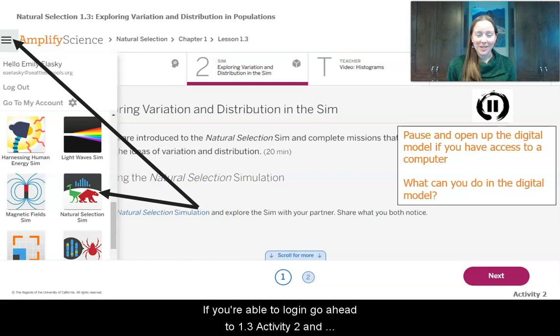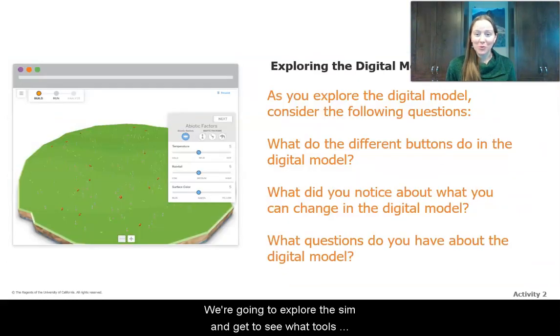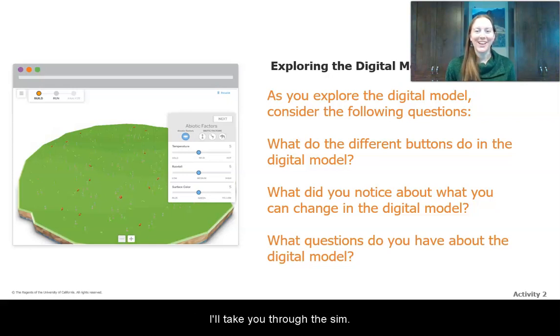If you're able to log in, go ahead to 1.3 activity 2 and launch the natural selection simulation and follow along. We're going to explore the sim and get to see what tools it has. If you're trying this exploration at home, consider what the different buttons do, what you can change, and are there any questions? If you're not able to log in, don't worry, I'll take you through the sim.